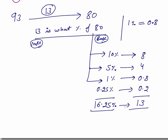So 93 is 16.25% more than 80. I calculated 13 is what percent of 80 — that is, more is what percent of base. Whenever we can't take the ratio, we always use the 100%, 10%, or 1% method.